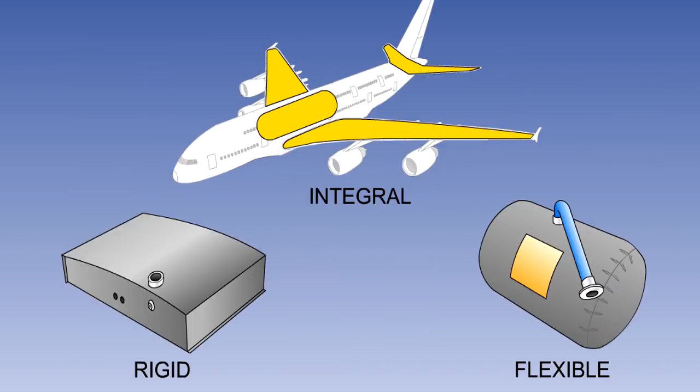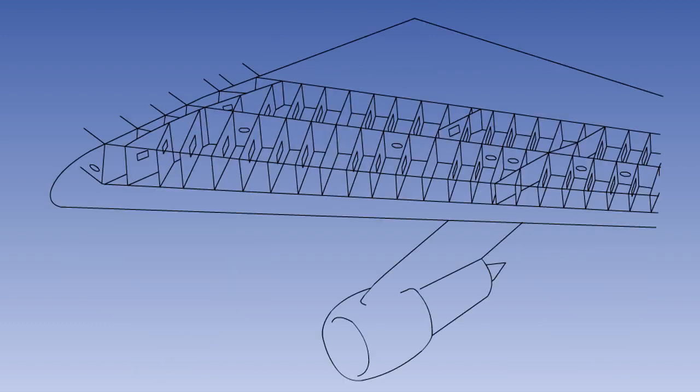The main points to be taken from this lesson are that aircraft fuel tanks can be integral, rigid or flexible, and that baffles are fitted in the tanks to minimize fuel surges during aircraft maneuvers.